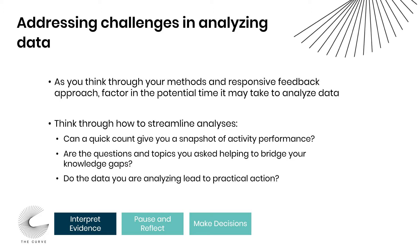Here are just a few strategies you might want to think through as you're trying to streamline your analyses. First, within your evidence that you've gathered, is there a way to take a quick count of something that might illustrate the impact of your activity? This could be the number of occurrences of an activity that was performed, or just a quick count to get an overall view of where future problems or areas to probe more deeply might lie.